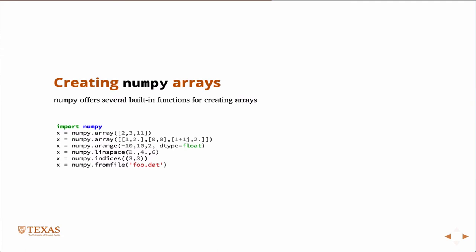I can also create a LIN space, a linear space. So this is going to go between one and four. So it's going to give me, those will be the end points, one and four. And it's going to give me six numbers total. So one and four, and four in between.